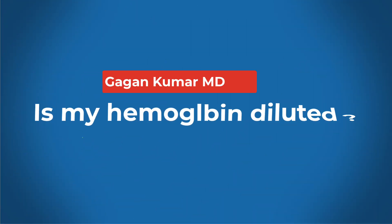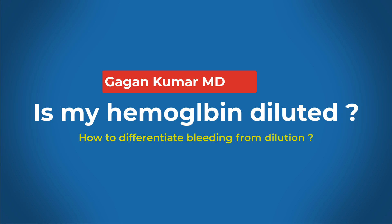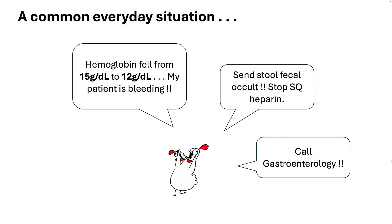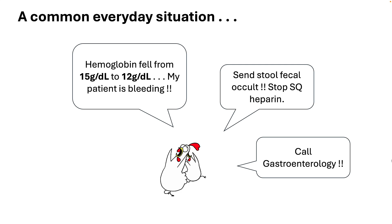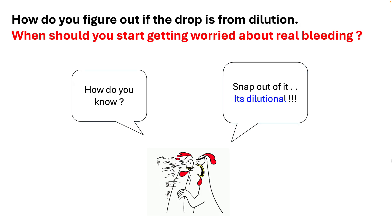Hello everyone. Today we are going to explore how to determine if there is a dilution component affecting your hemoglobin levels. For instance, imagine a patient's hemoglobin level was 15 at the time of admission and has now dropped to 12. How can you tell if this is due to bleeding versus it simply being a result of dilution? In these scenarios, it's crucial to avoid guessing and aim for more accurate assessment.